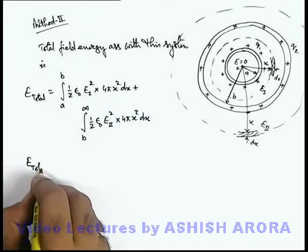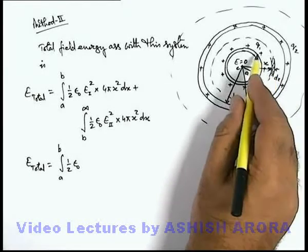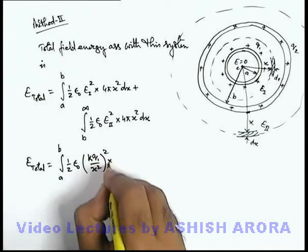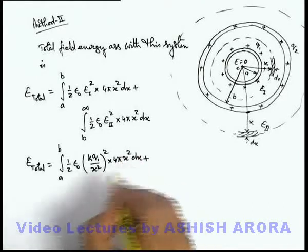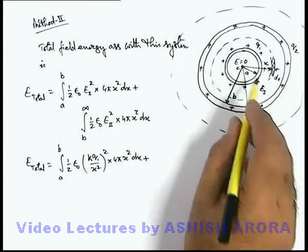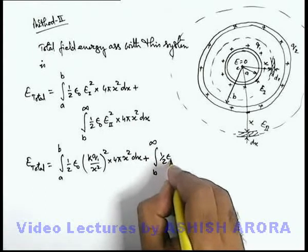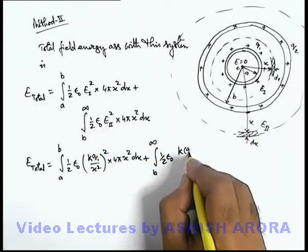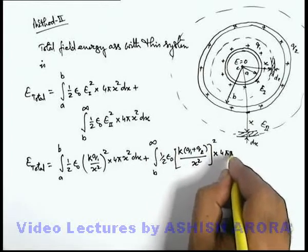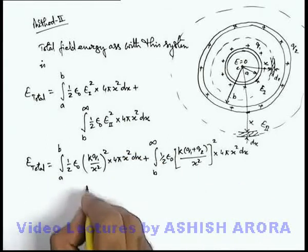Substituting the values: E_total equals integration from a to b of (1/2)·ε₀·(k·q1/x²)²·4πx²·dx, since the electric field in the inner region is only due to charge q1. Plus, from b to infinity, (1/2)·ε₀·(k·(q1+q2)/x²)²·4πx²·dx, since in the outer region the electric field is due to both charges, calculated by assuming both charges appearing at the common center.